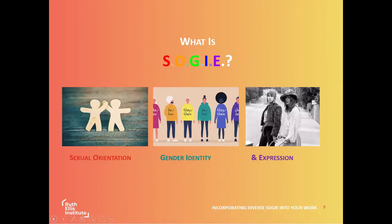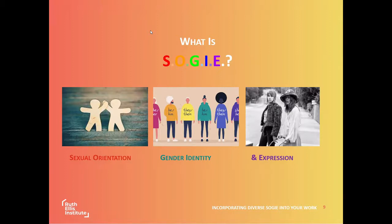We all have a sexual orientation — that is who we are attracted to, who we like, love, and want to spend time with. We all have a gender identity that is intrinsically who we know ourselves to be. Sexual orientation is how we feel about another person; gender identity is how we feel about ourselves. Gender expression is often the first thing folks see or hear — it's our style of dress, body language, and the type of gender roles we play in society: masculine, feminine, androgynous, both, or neither.